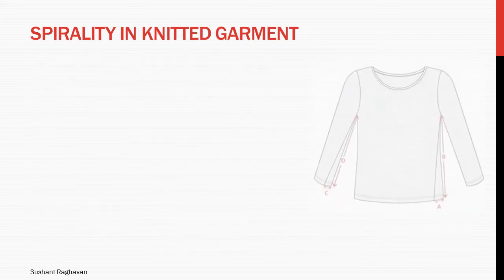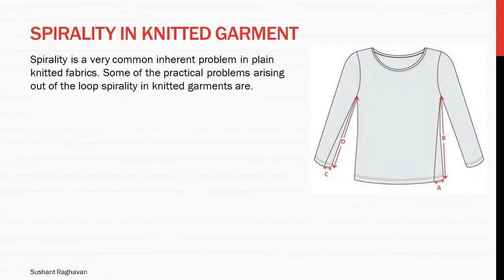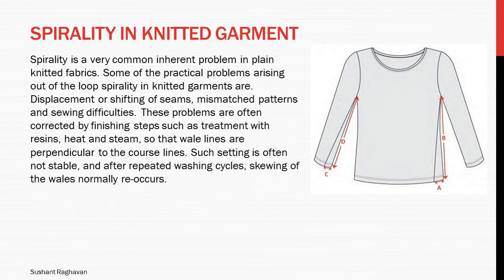Spirality is a very common inherent problem in plain knitted fabric. Some practical problems arising out of loop spirality in knitted garments are displacement or shifting of seams, mismatch patterns, and sewing difficulties. These problems are often corrected by finishing steps such as treatment with resin, heat, and steam friction so that wales are perpendicular to the course lines. Such setting is often not stable, and after repeated washing cycles, skewing of the wales normally reoccurs.